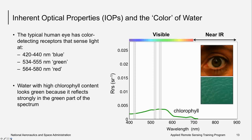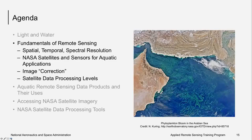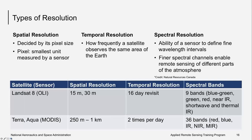Now let's learn about satellite remote sensing. In this section, we will discuss image resolution, some of NASA's satellites and sensors for aquatic applications, image correction, and satellite data processing levels. When we talk about resolution, three types come to mind: spatial, temporal, and spectral.